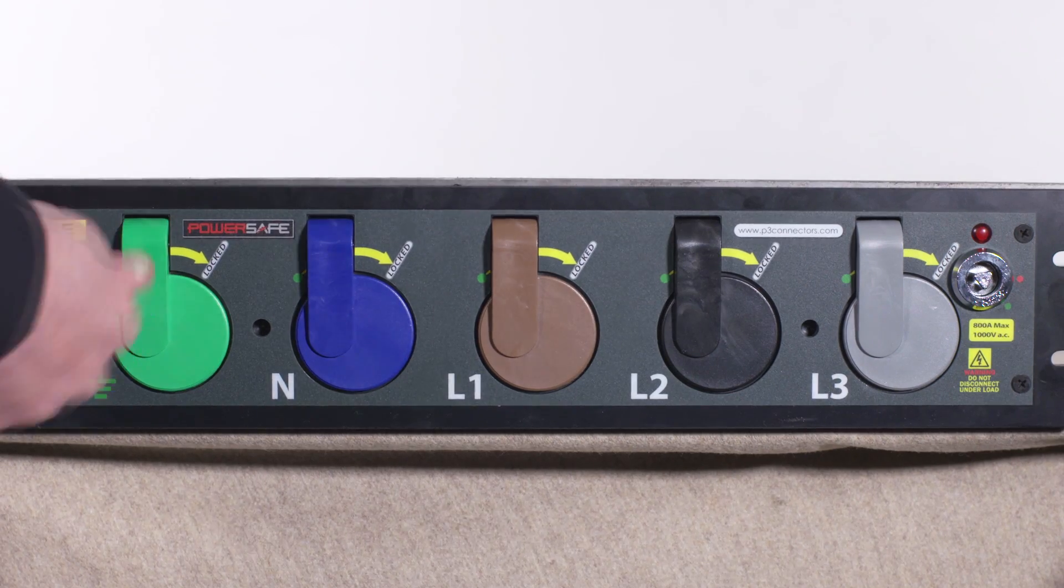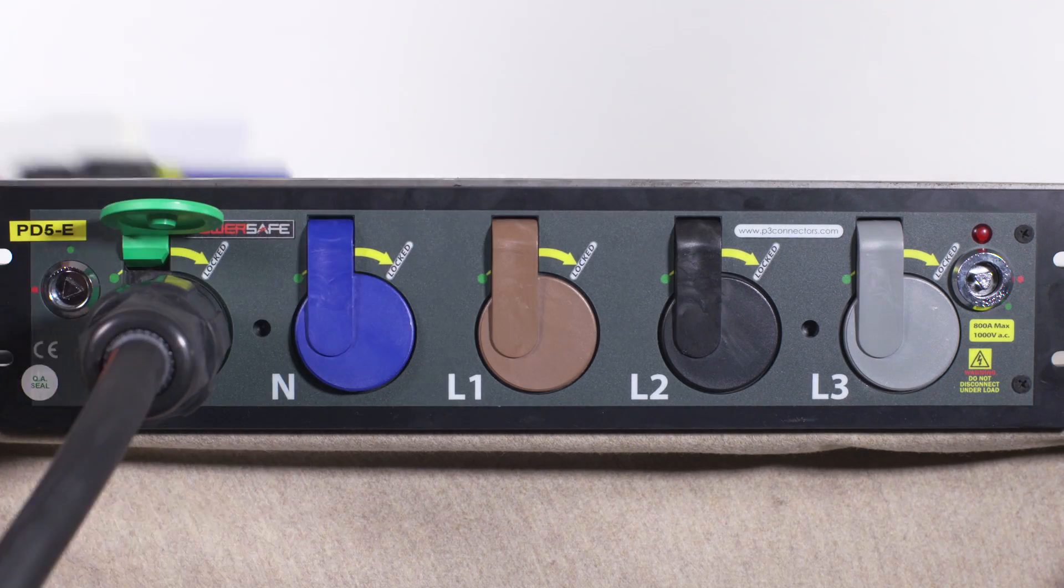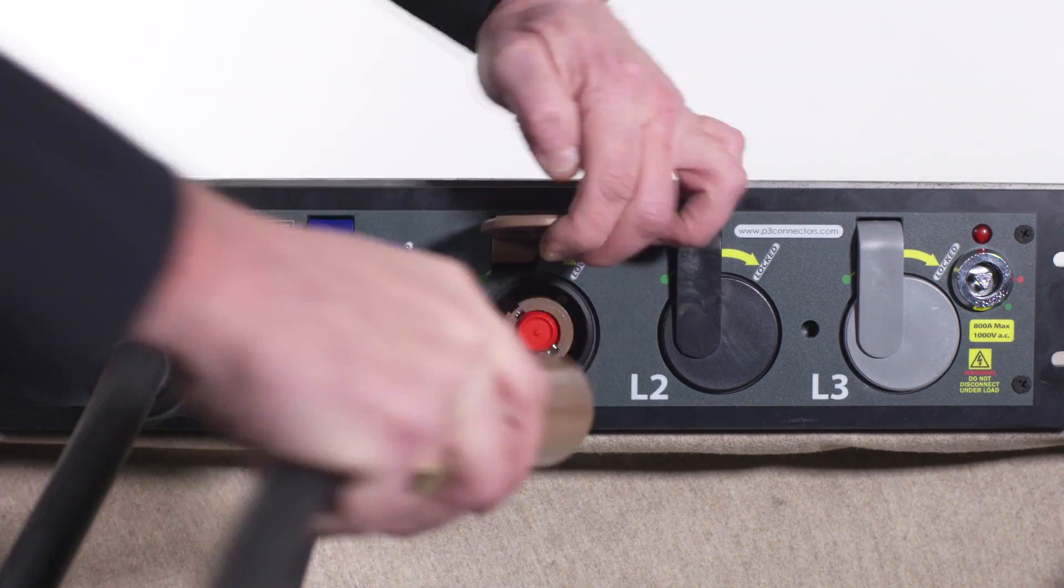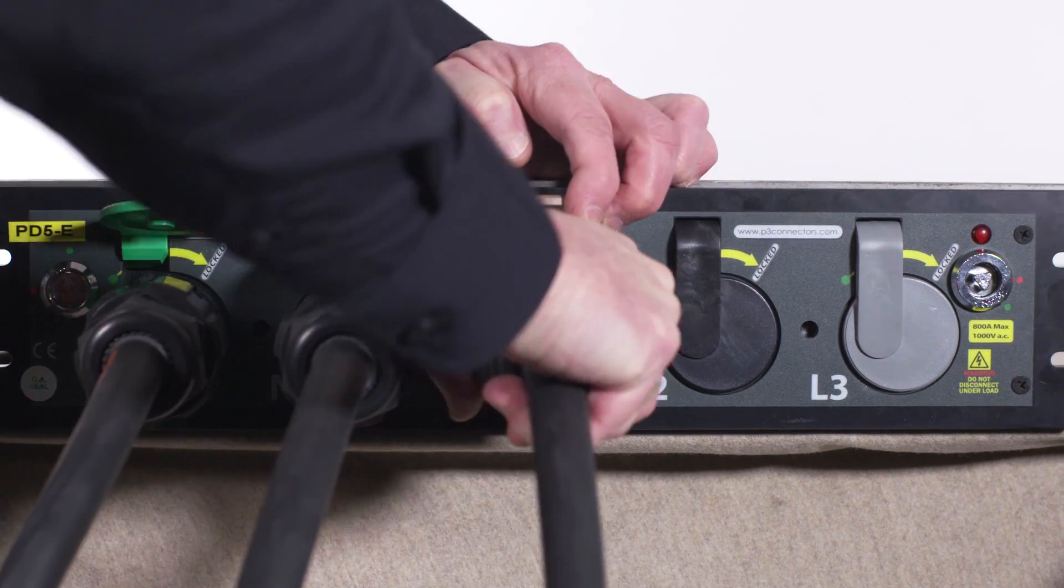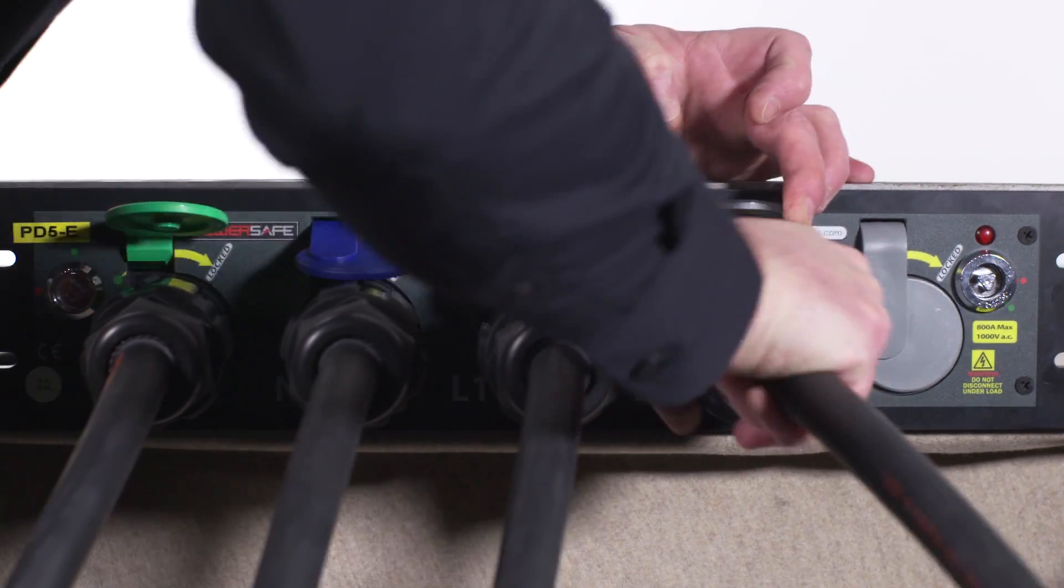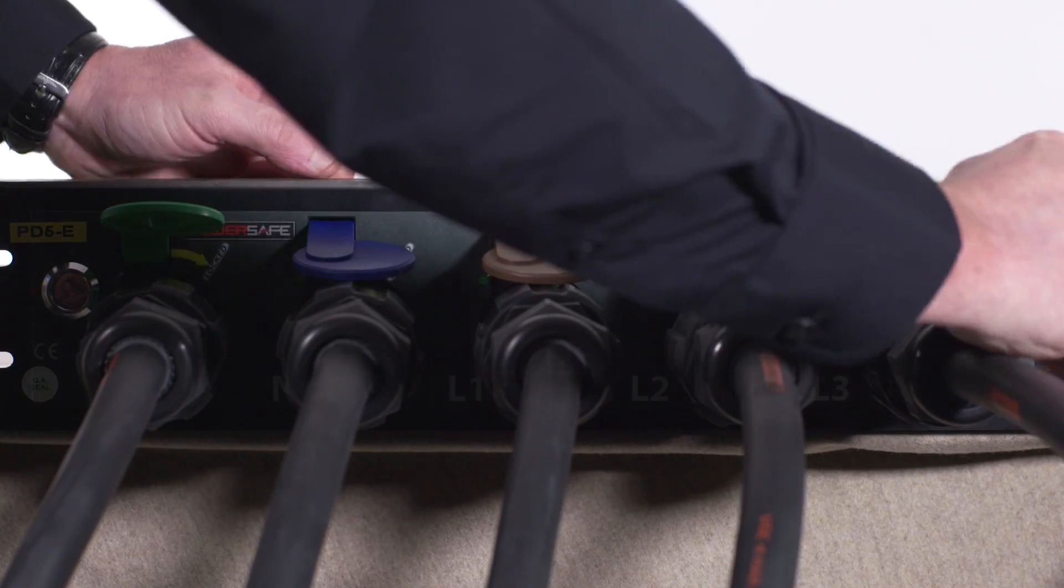PowerSafe connectors can be used with our sequential mating units. These units assist with the safe and controlled connection of the single core power cables by controlling the sequence of connection to ensure earth and neutral connections are made before phase connections can be made, thereby improving safety by eliminating connection errors and ensuring safety circuits are always connected.